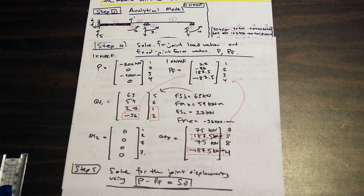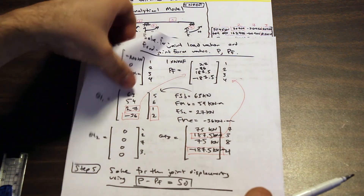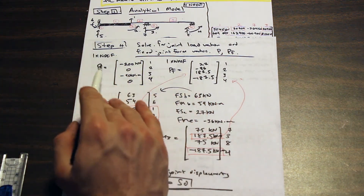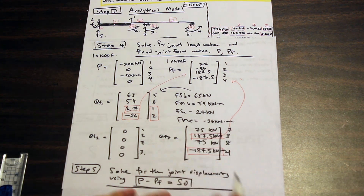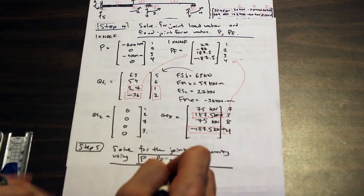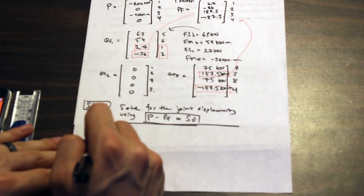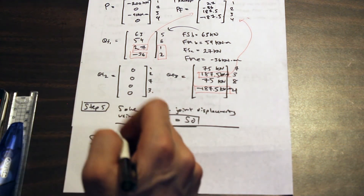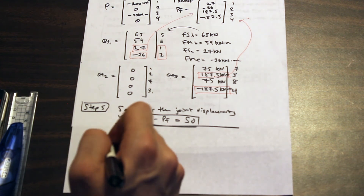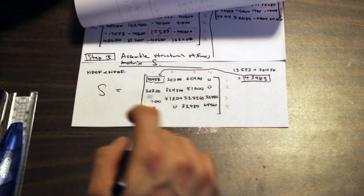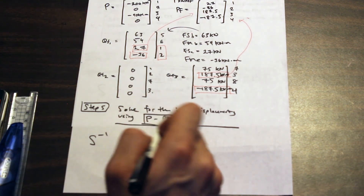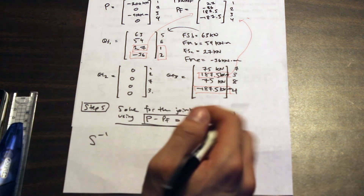We have everything we need: S was assembled back here, P is up here, and PF is here. We just need to rearrange and solve for D. I won't write out the entire S matrix, but I'll show you how to type it into your graphing calculator — store S in a matrix, then compute S inverse and multiply by P minus PF.